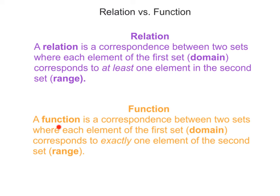A function, though, is a correspondence between two sets where each element of the first set, the domain, corresponds to exactly one element of the second set, the range. Notice the difference: in a relation, an element in the domain could be assigned two, three, four, or any number of values from the range, whereas in a function, every element in the domain is assigned exactly one element in the range.